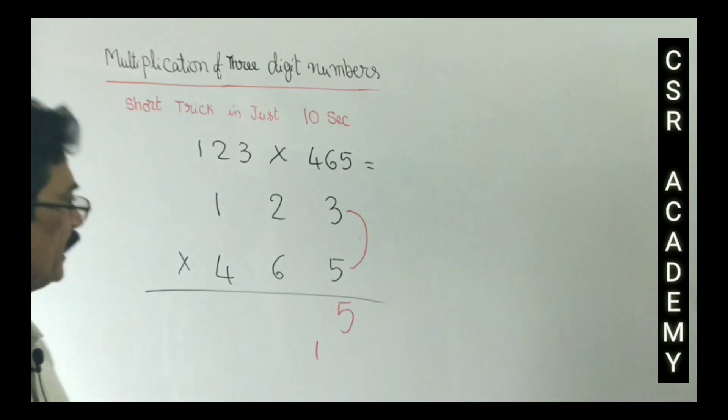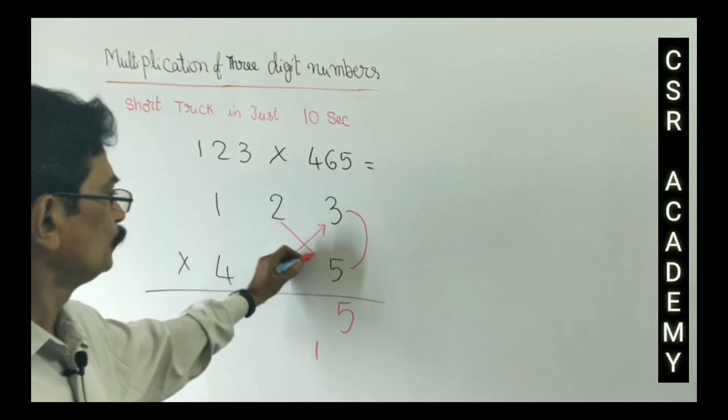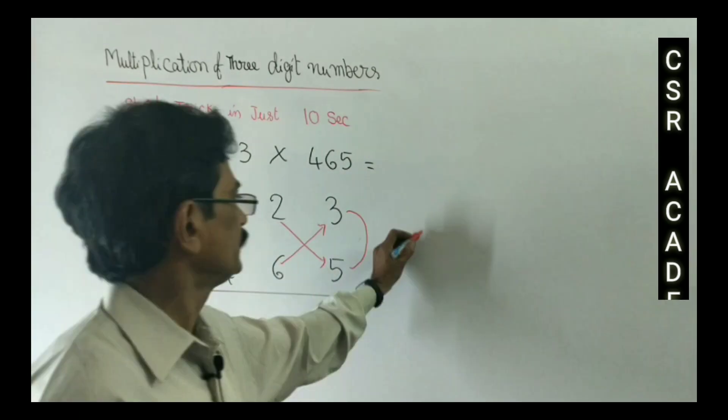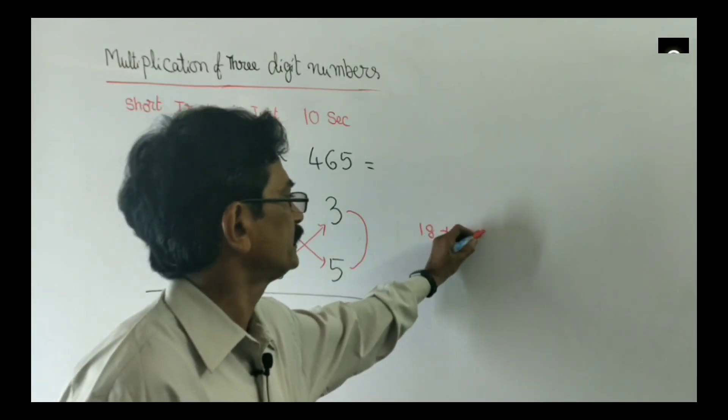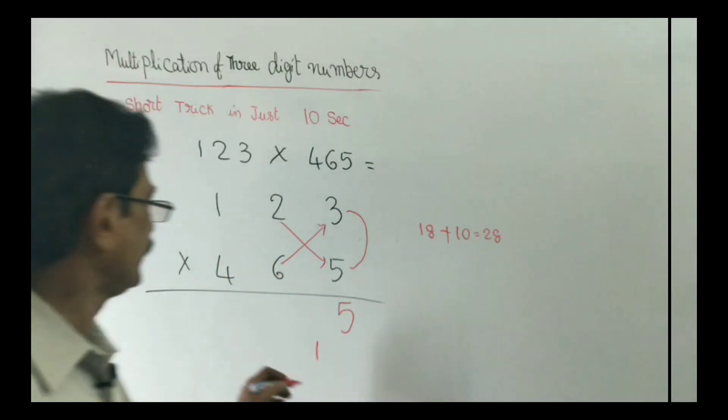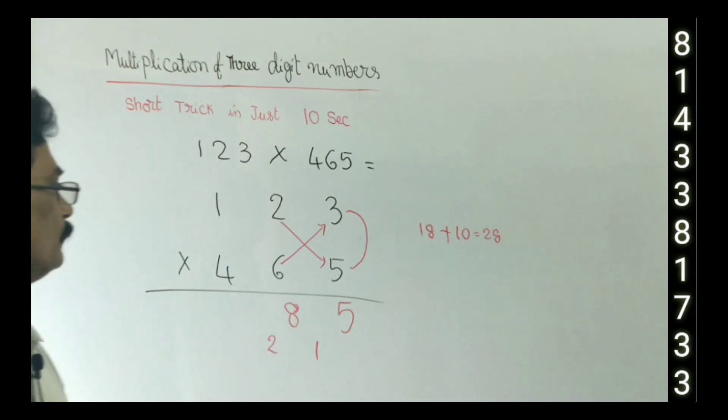Next step: 6 into 3, 2 into 5. 6 into 3, 18, plus 2 into 5, 10. This is equal to 28. 8 right here, 2 right in the down.